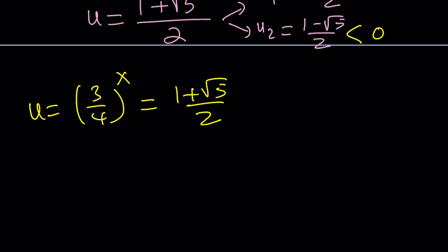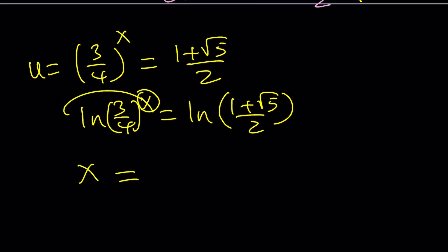ln 3 over 4 to the x equals ln 1 plus root 5 over 2. And then we can move the x to the front, x, and then divide by ln 3 fourths, and we're going to get the answer from here numerically. Awesome. You're going to see this point on the graph in a little bit. That's the real x value.